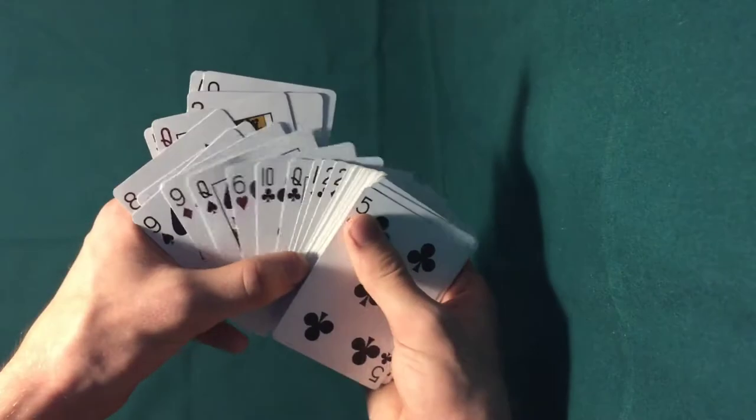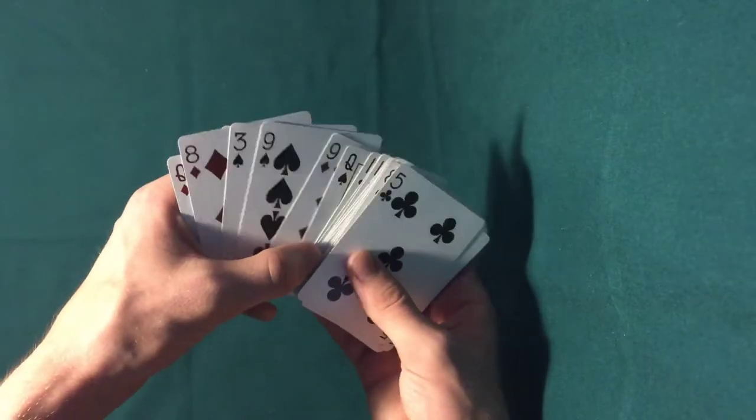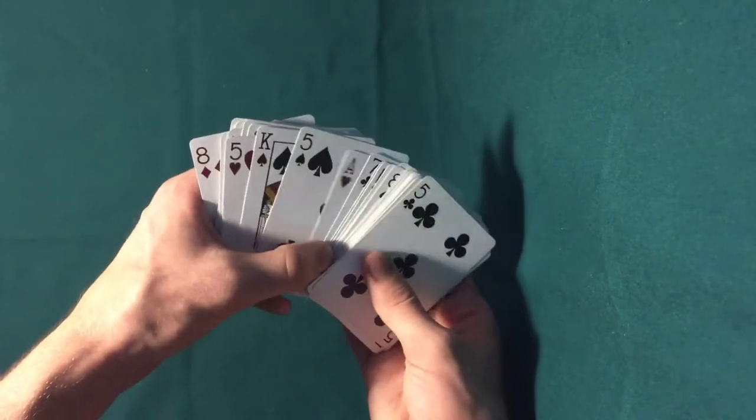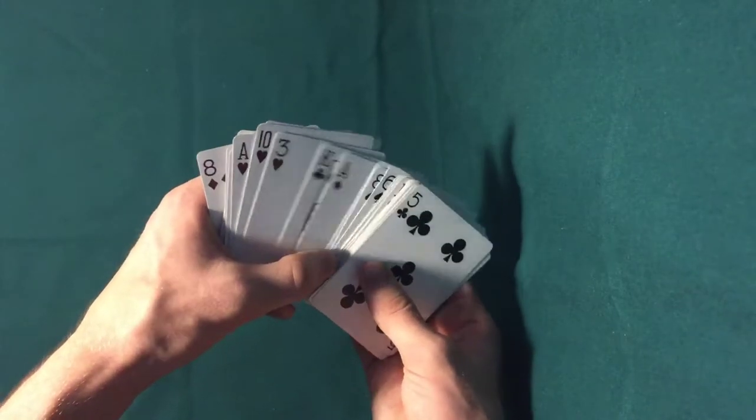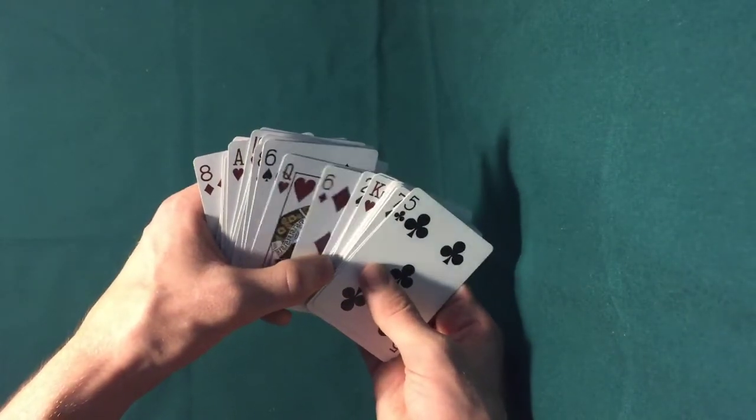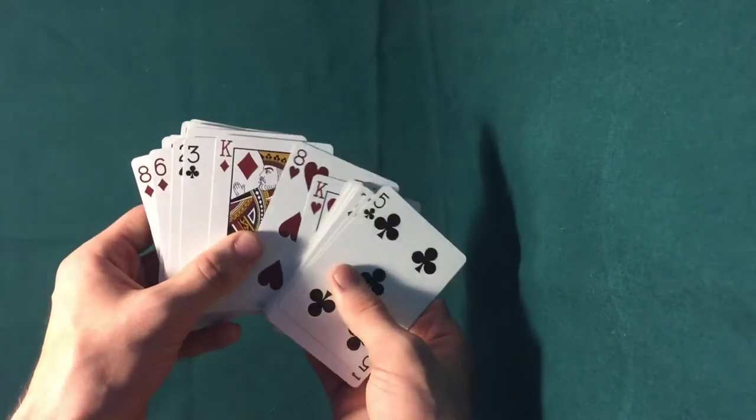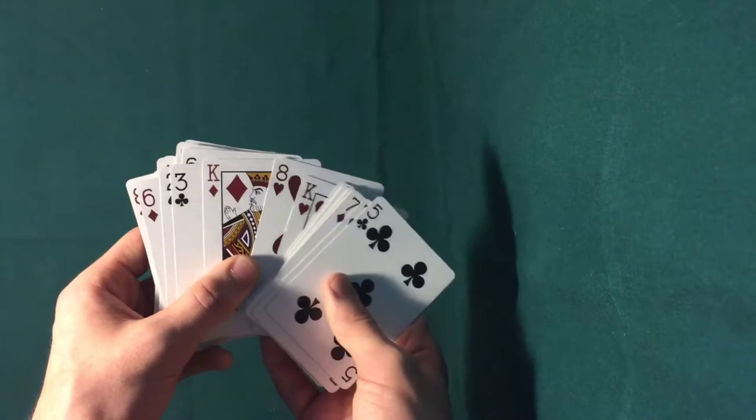Now if you think about it, if you know what the king of diamonds is, or if you know what the bottom card is, in this case the king of diamonds, then you can just put it on top. Now, as you can see, if we go through the deck of cards, the card after the king of diamonds is the eight of hearts. So that kind of is a giveaway of what their card is.